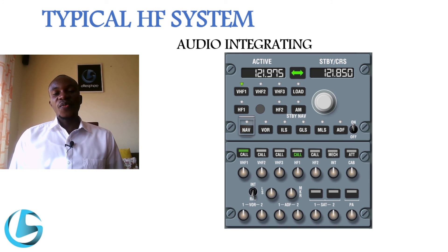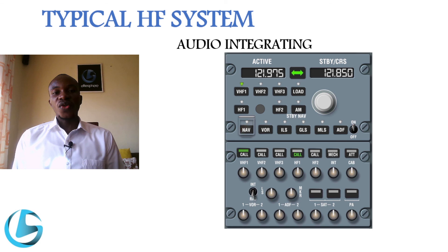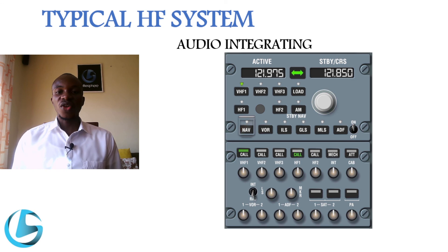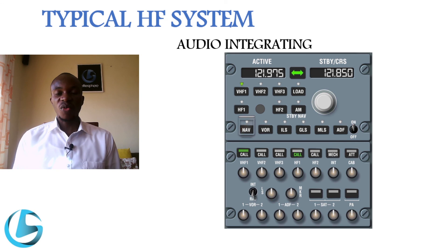The final component is the audio integrating system. This is not specifically a part of the HF system, but it provides integration between the audio system of the aircraft and the HF communication system. It is the same system used for integration of VHF communication, HF communication, and other communication systems found within an aircraft. Its function is to integrate the communications systems with the audio system of the aircraft.